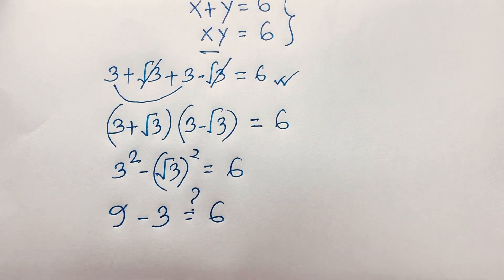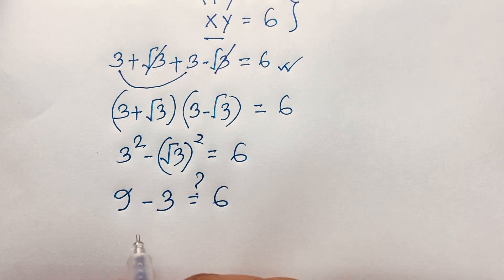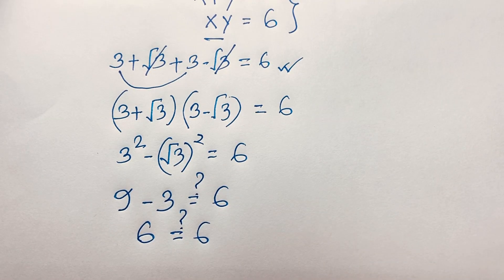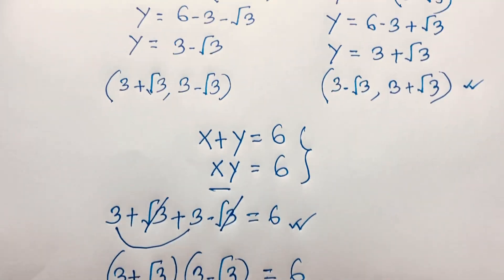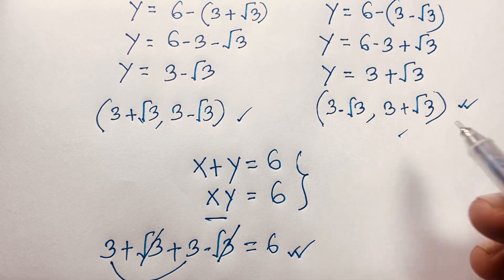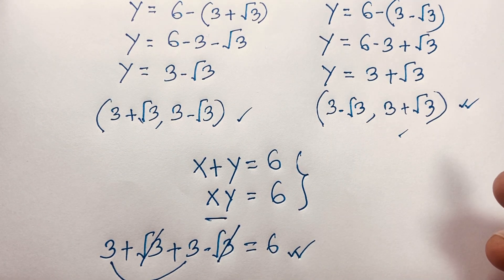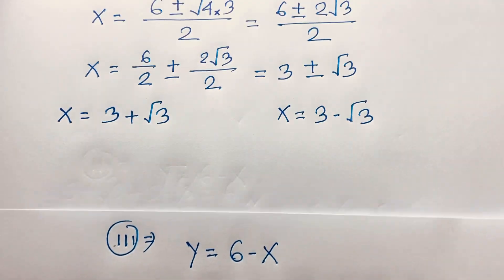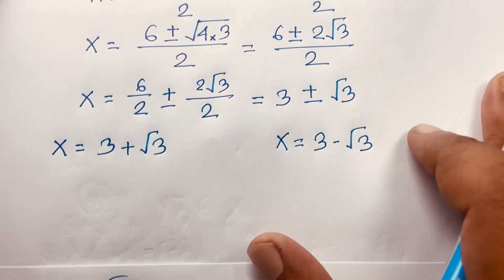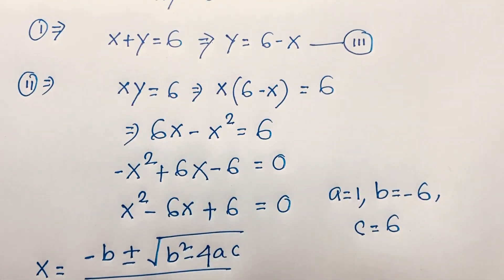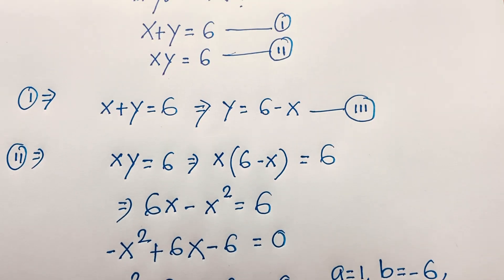So 9 minus 3 equals 6, which equals 6. Left hand side and right hand side are equal. So our final answers are these two real solutions — they are real solutions, not complex solutions. Thank you all. If you enjoyed this video, please subscribe to my channel for other interesting videos. Goodbye, take care.